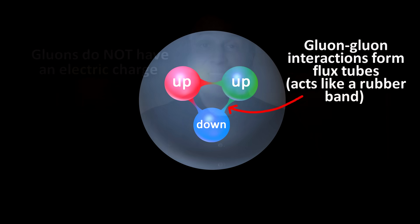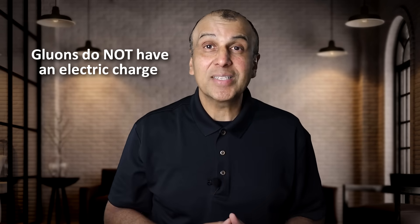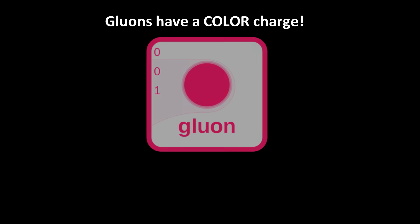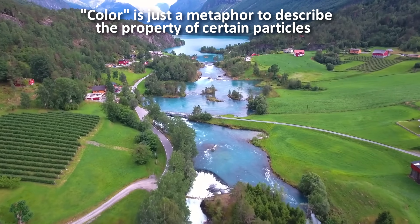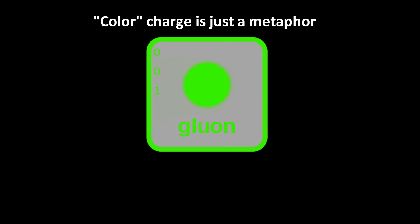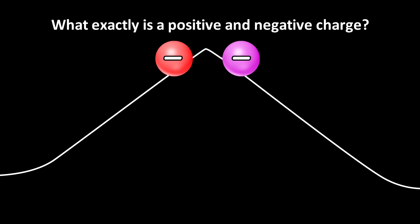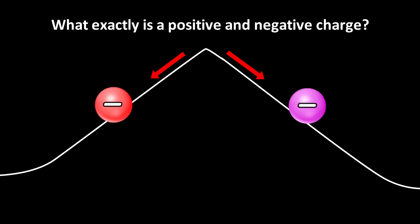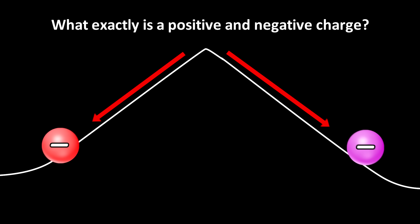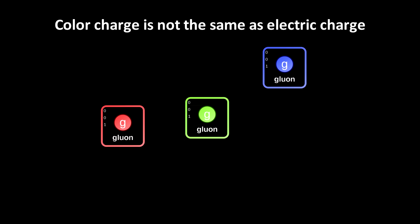Here's the shocker: gluons are electrically neutral. They do not have a positive or negative charge like protons and electrons. They have a completely different kind of charge called a color charge. It has nothing to do with colors that you and I can see with our eyes — it is just a metaphor to describe a new kind of property of certain particles. Physicists kind of understand how color charges work, but to be honest, no one really knows what a color charge actually is. In fact, no one knows what a positive or negative electrical charge is either. We know how it works, but what it actually is, no one knows. It is just a property that some particles have.